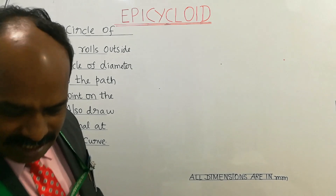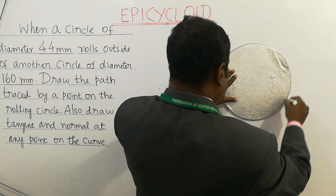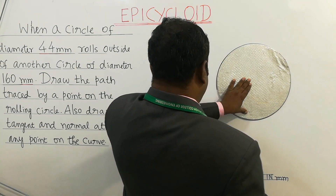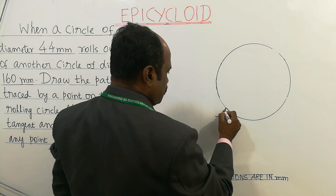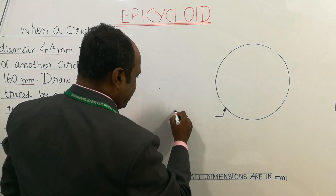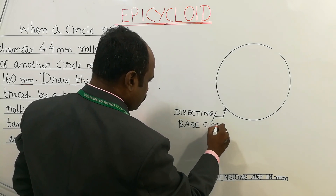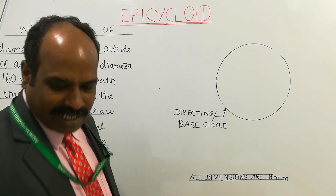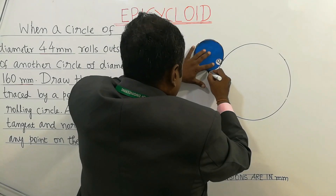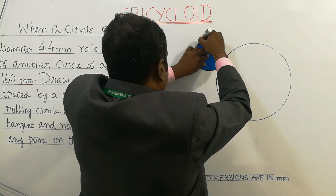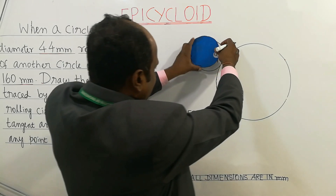For better understanding, I am now going to trace the path. This fixed circle is called the directing or base circle — it gives direction to the movement of the rolling circle. The point of contact is P. When the rolling circle rolls a certain distance clockwise, the point P would have changed its position.